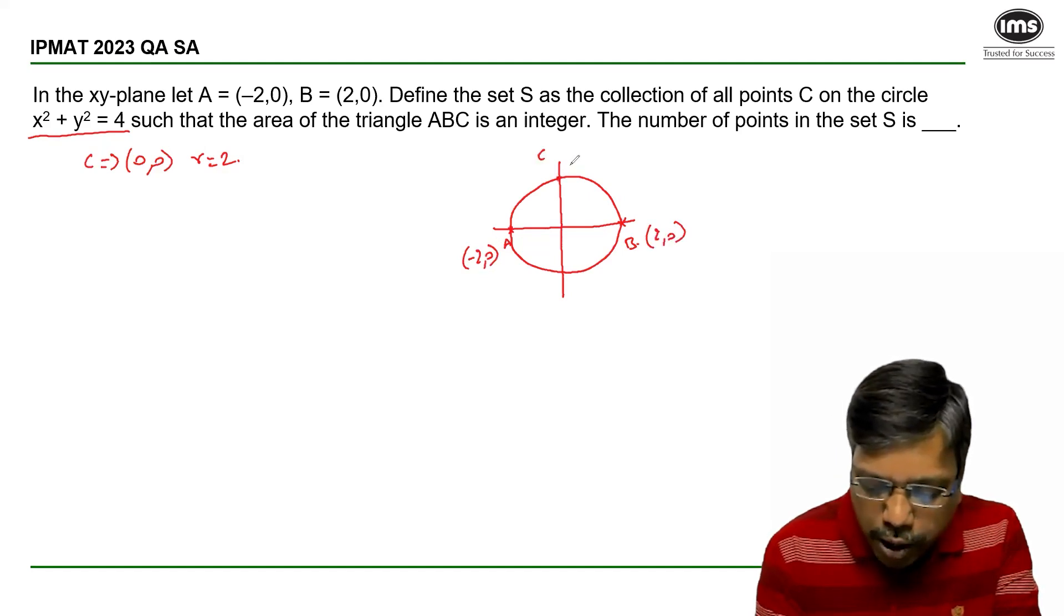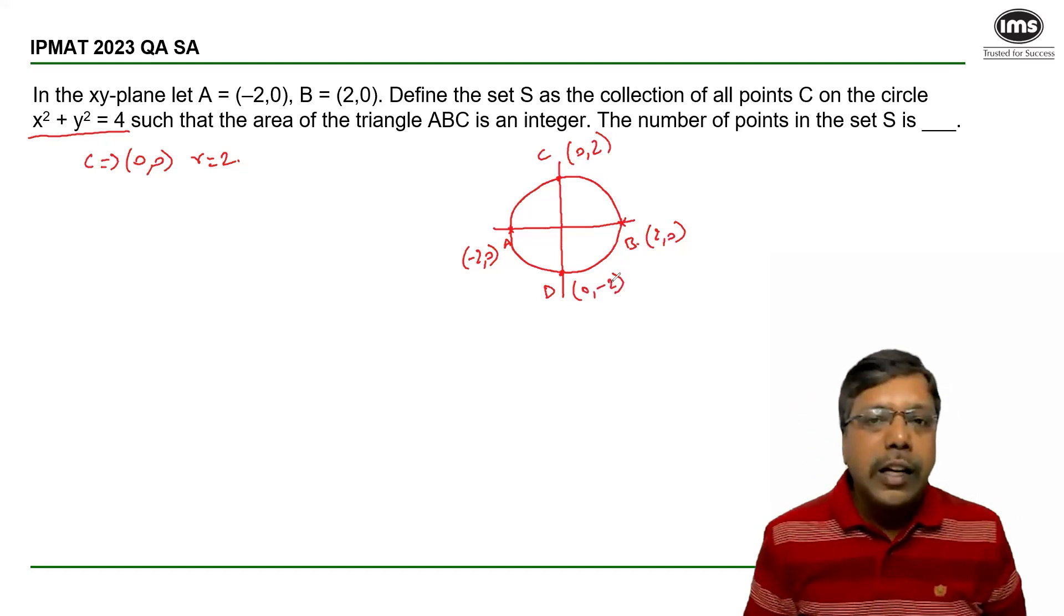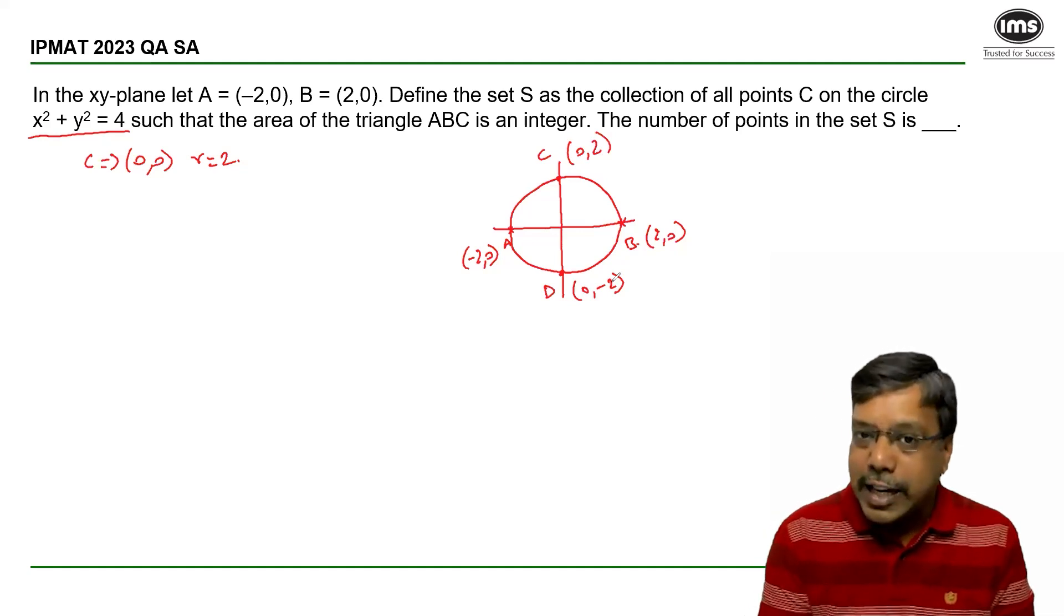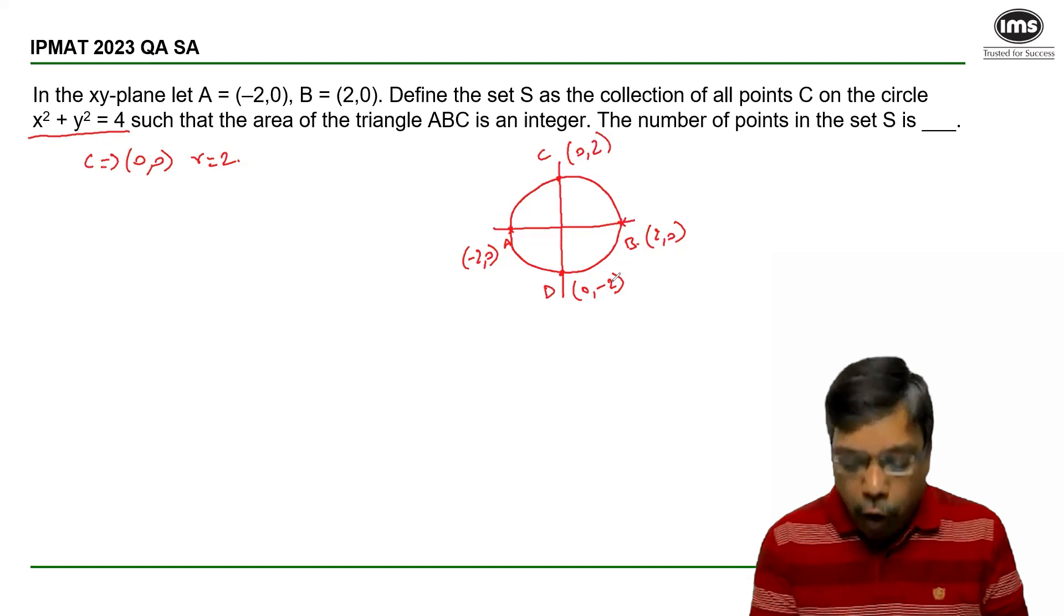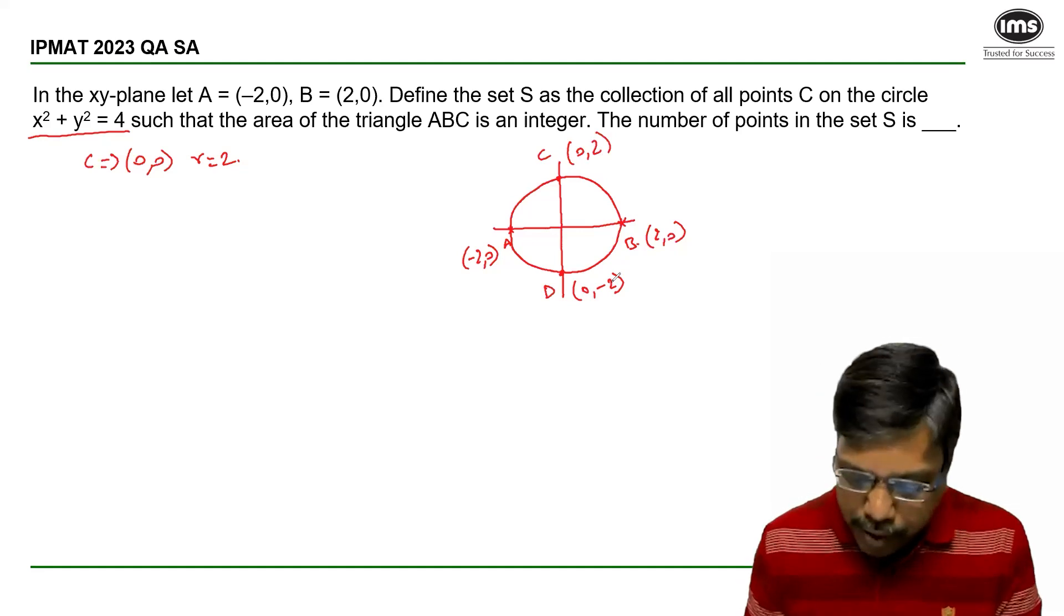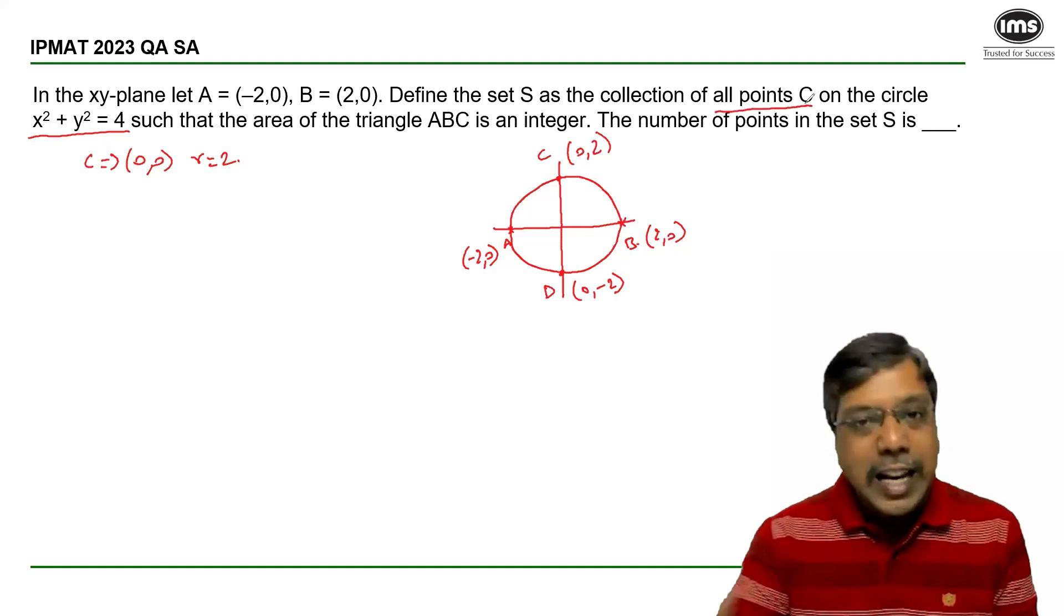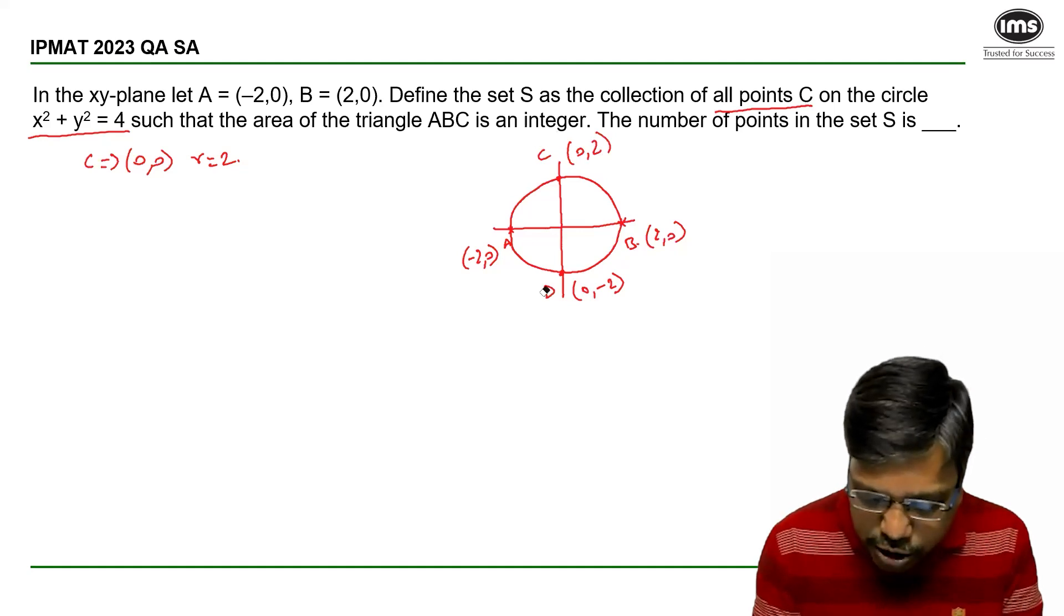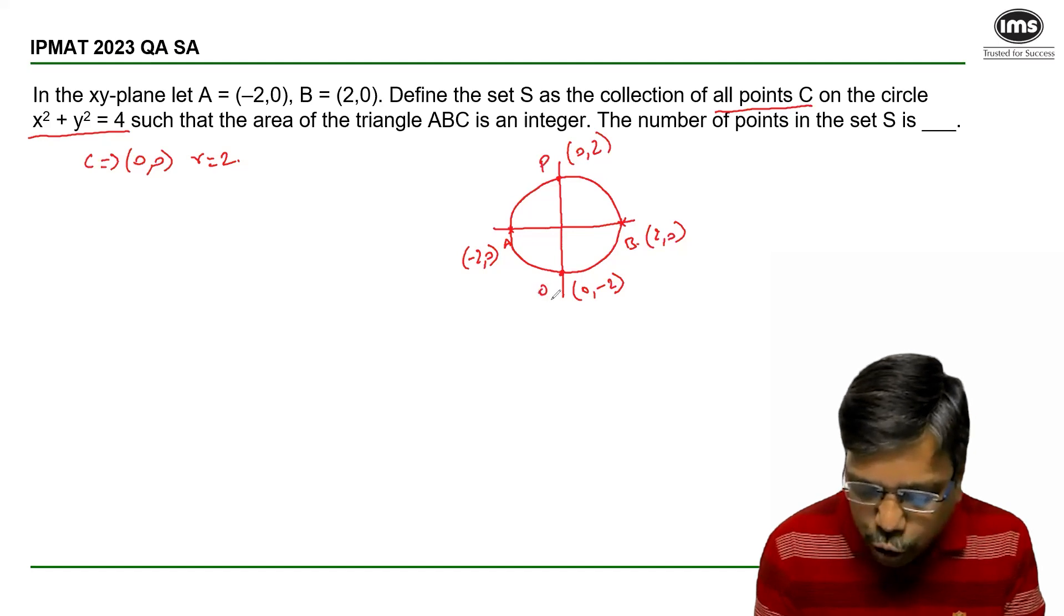Suppose if I say this is point C and point D, then C is 0 comma 2 and D is 0 comma minus 2. Now I need to find the number of points which lie on the circle such that the area of the triangle formed by A, B and that point is an integer. Now since he has said that all points that we need to find are named as C, let me make a small change in the nomenclature here. Let me say this is P, this is Q.